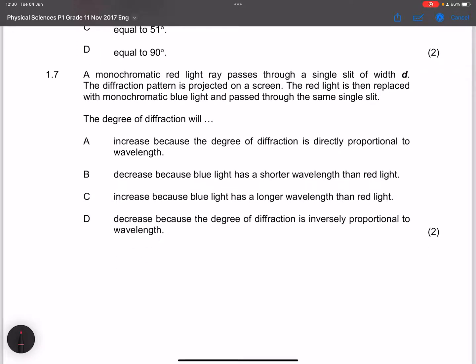The next question, they say a monochromatic red light passes through a single slit of width d. They say the diffraction pattern is projected on a screen. The red light is then replaced with monochromatic blue light. Note what are we doing? We're taking a light with a longer wavelength and we are substituting it with a light that has a shorter wavelength. And they say the degree of diffraction will.